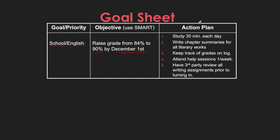Then they look at their action plan. They have a daily plan — breaking their English class into literature and other areas — to see what they're going to do to improve. They haven't been keeping track of their grades, so that's one step. Their attendance at extra help hasn't been great, so they're going to get a study buddy to help review their writing assignments before turning them in.